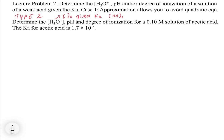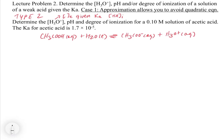Let's set it up as we normally would. The first thing we're always going to do is write out our reaction. So we get CH3COOH aqueous plus H2O liquid in equilibrium with CH3COO- aqueous plus H3O+. The way I know this is the reaction is because we're taking acetic acid and putting it into water.